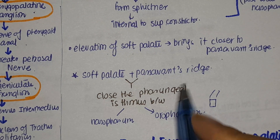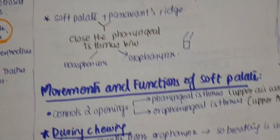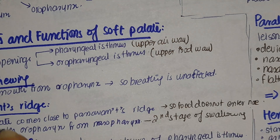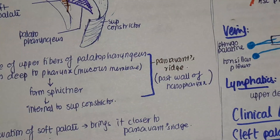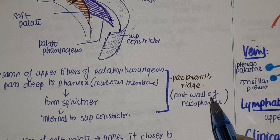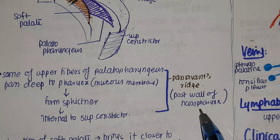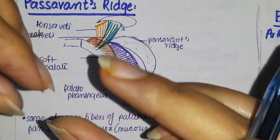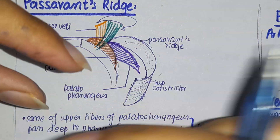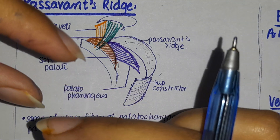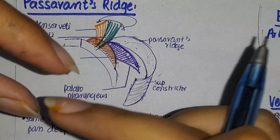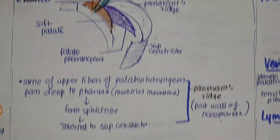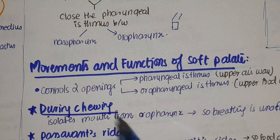That closure of the pharyngeal isthmus is very important because it does not allow food to enter the nose. This is the major function of Passavant's ridge. It is located in the posterior wall of the nasopharynx, and whenever the soft palate moves closer to it, it closes the opening between the nasopharynx and oropharynx so that food does not enter the nose.